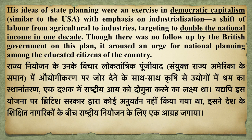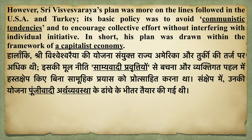There was a target to double the national income in one decade — India's goal was to double national income in ten years. The British government didn't have any interest in this plan, but after this plan the educated citizens of the country were more aware of national planning and their progress increased. Vishweshwarya's plan was based on the lines of USA and Turkey's basic policy, with the main aim to avoid communistic tendencies and to encourage collective effort.